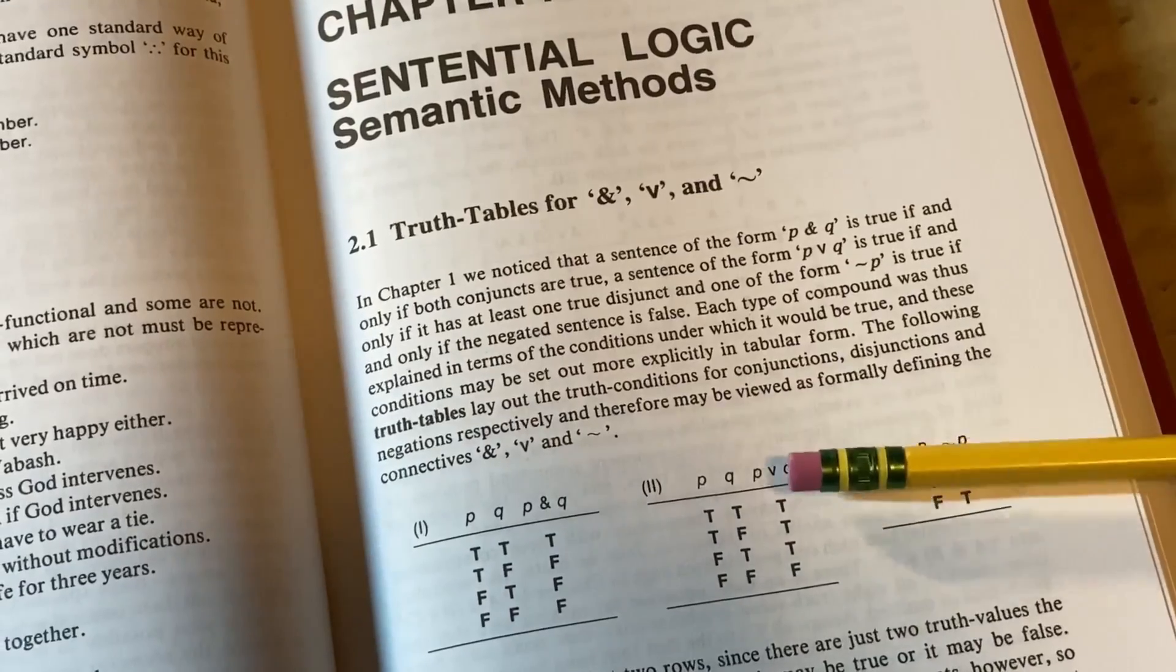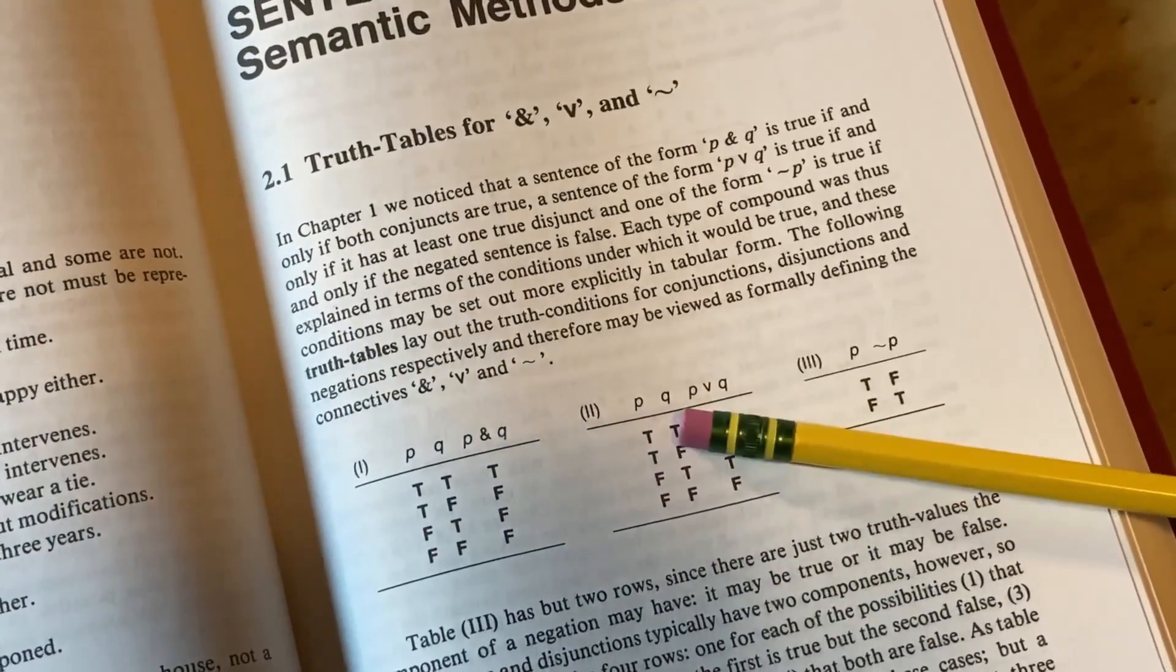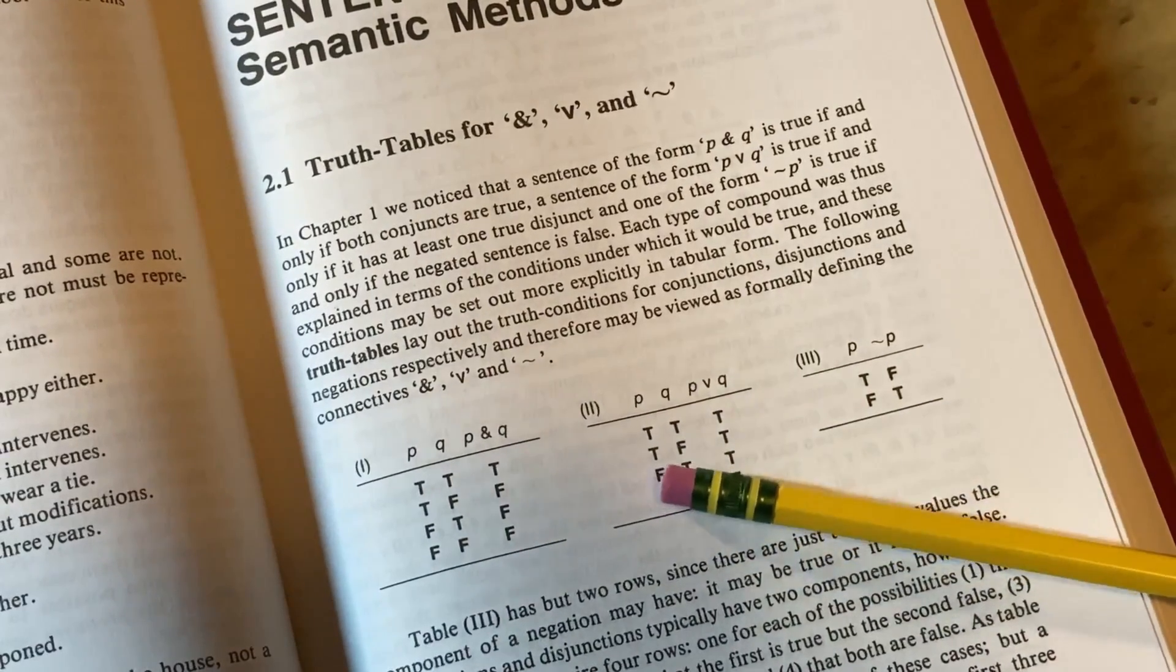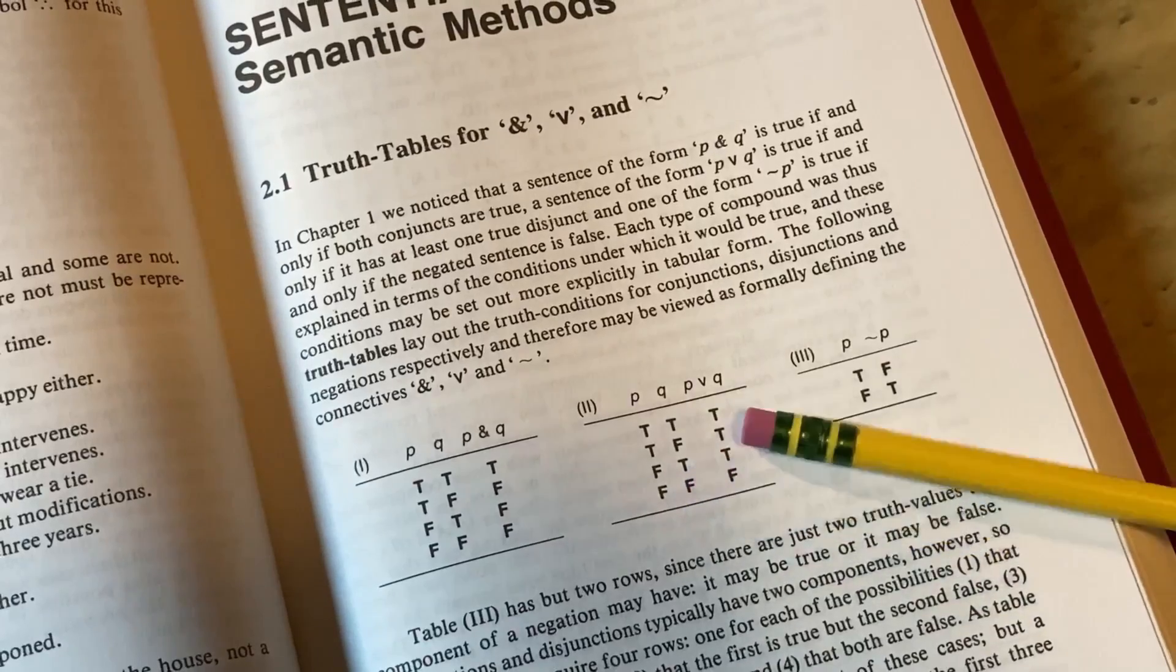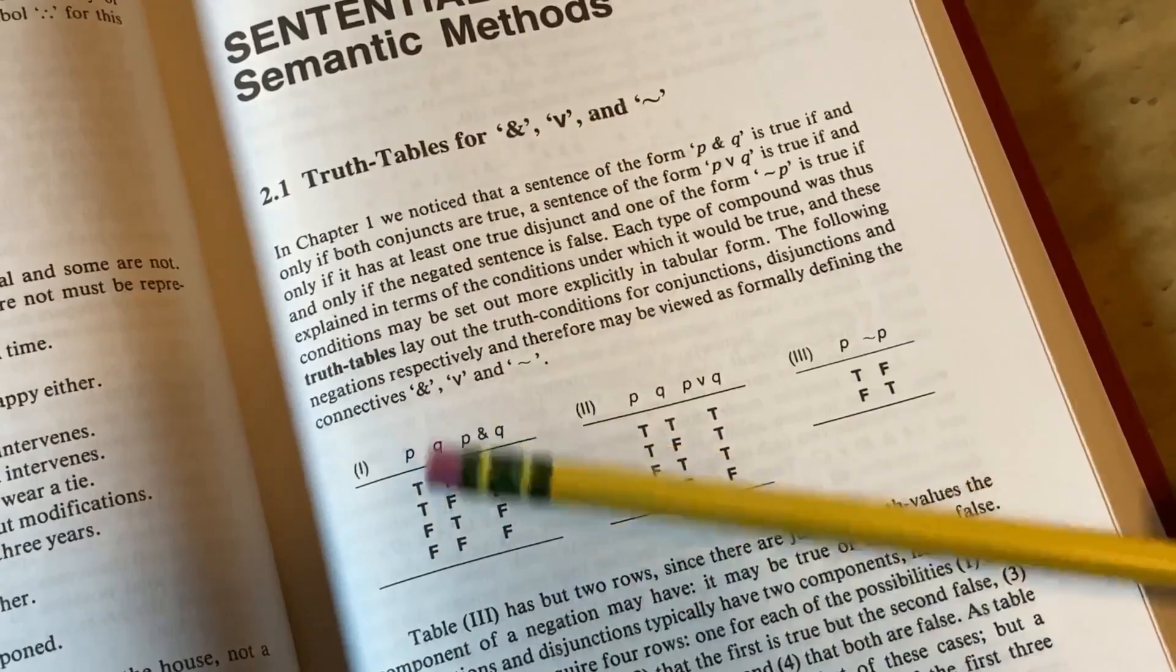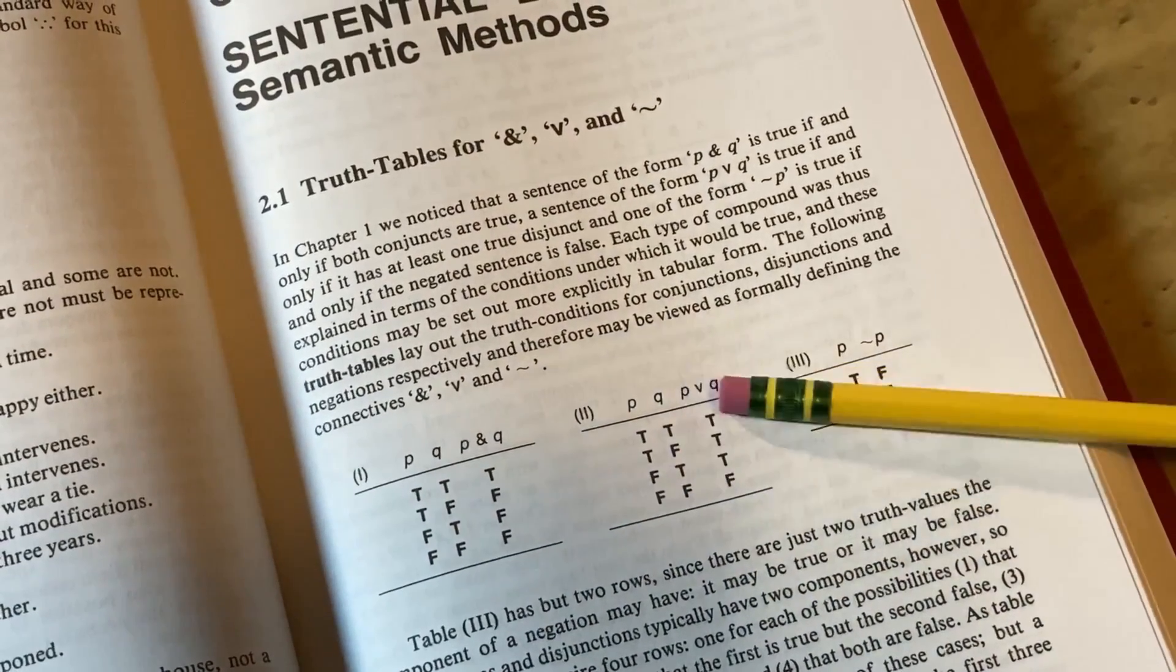An or statement is going to be true when at least one of them is true. And that's evidenced here again by this truth table. You see here in the first row, when they're both true, it's true. In the second row, only P is true and it's true. In the third row, only Q is true and it's true. But when they're both false, that's when it's false. So and statements are true when they're both true. And then or statements will be true when at least one of them is true.